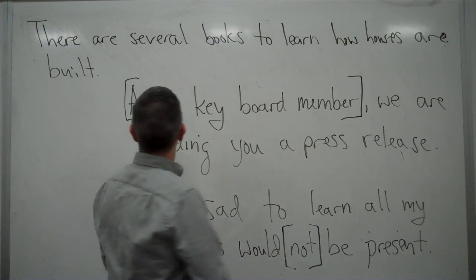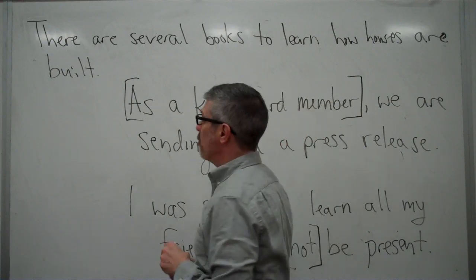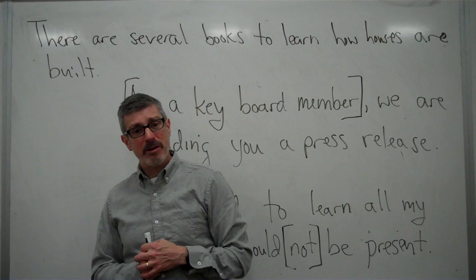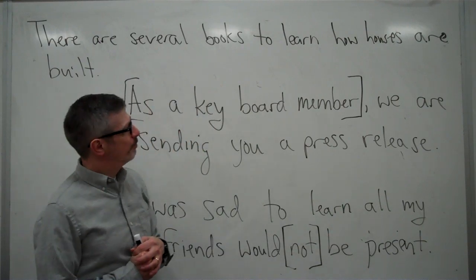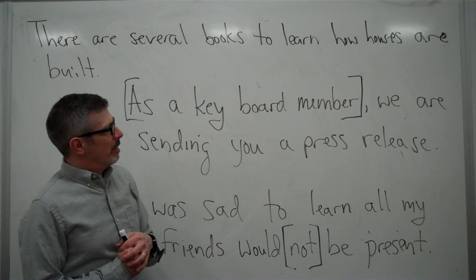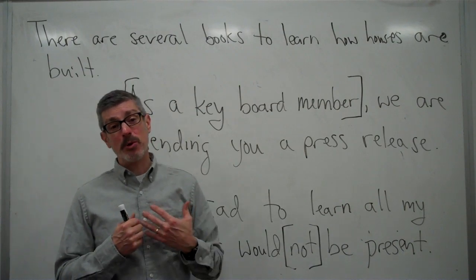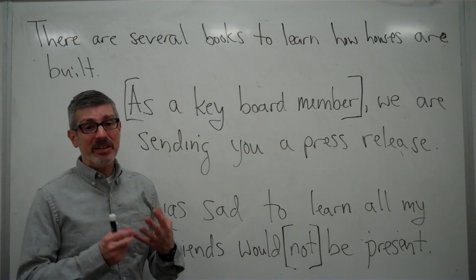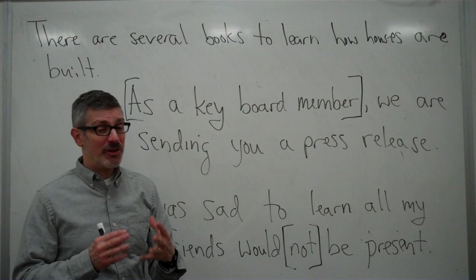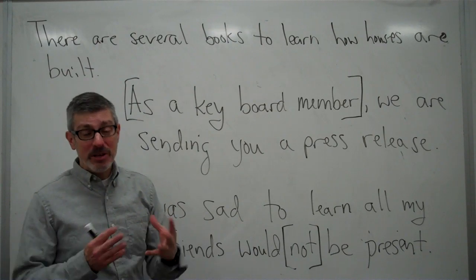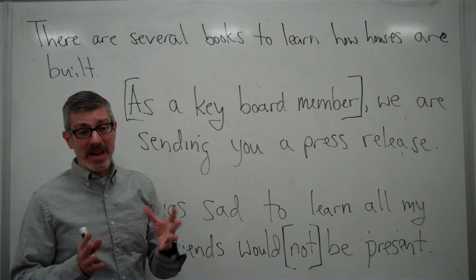Finally, we have this sentence: 'There are several books to learn how houses are built.' The problem here is one of what we call agency. That is, when there is supposed to be an agent — somebody to do something — and there isn't one, then you are lacking an agent and you have an agency problem.